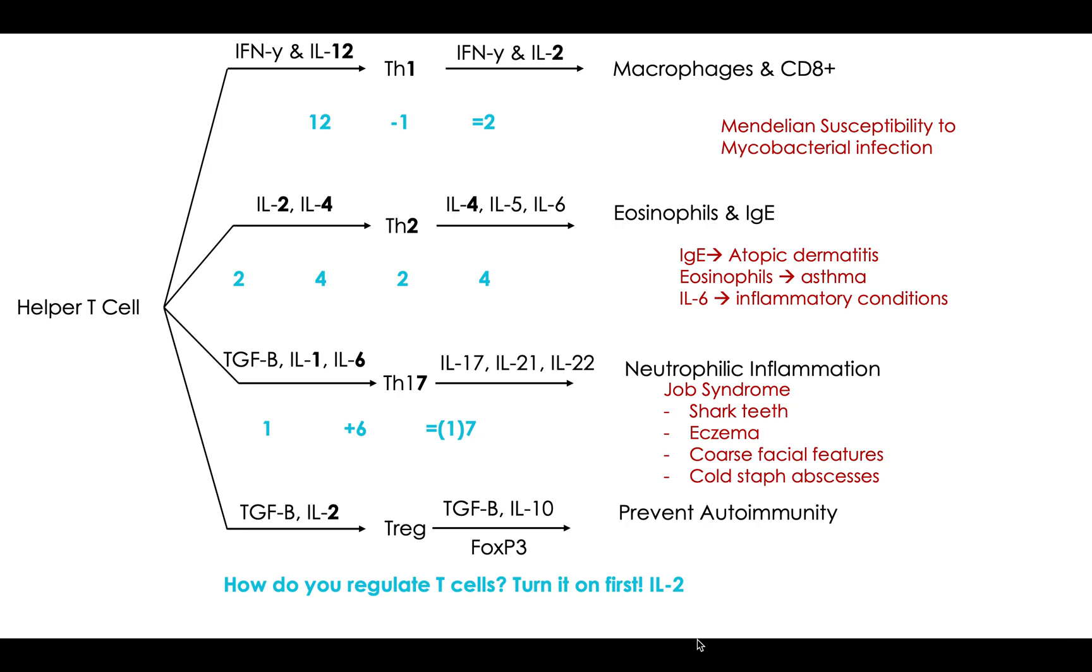Th17 does neutrophilic inflammation. And so if you have a problem with your Th17, you're going to have something called Job Syndrome. And this one has shown up before, and usually they'll describe some kid with a coarse facial feature. I put shark teeth here, that's extranumerary teeth as a kid. Maybe they have some eczema. Something's going on. This kid looks kind of funky. That's going to be a problem in your Th17 system. So if you can remember, the 1 and 6 gives you 7. And then these are kind of high-up numbers. So maybe think that they have this kid with 17 teeth. I mean, that's a lot, right?